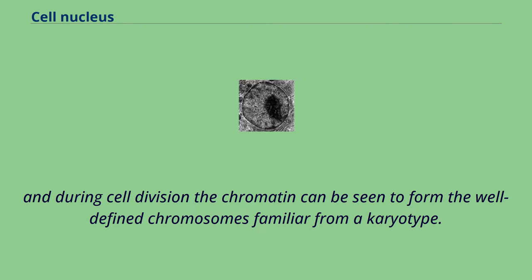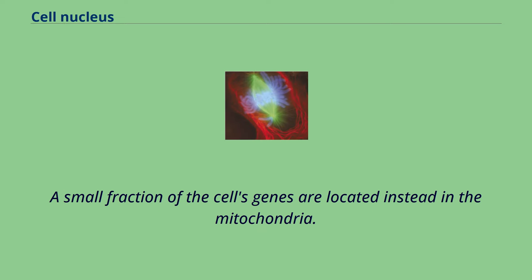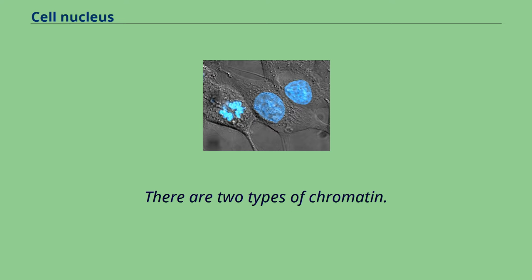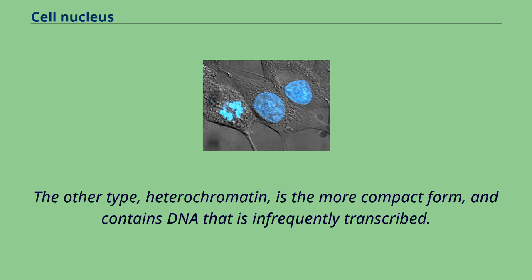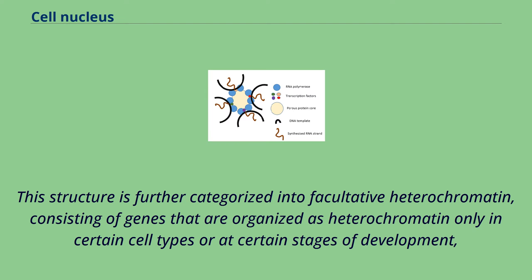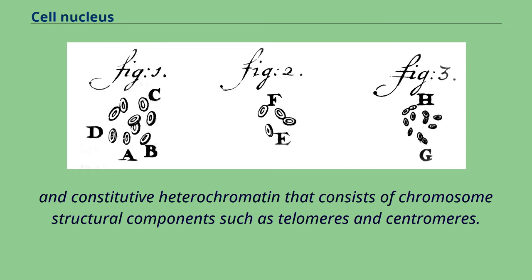A small fraction of the cell's genes are located instead in the mitochondria. There are two types of chromatin: euchromatin is the less compact DNA form and contains genes that are frequently expressed by the cell. The other type, heterochromatin, is the more compact form and contains DNA that is infrequently transcribed. This structure is further categorized into facultative heterochromatin, consisting of genes that are organized as heterochromatin only in certain cell types or at certain stages of development, and constitutive heterochromatin that consists of chromosome structural components such as telomeres and centromeres.